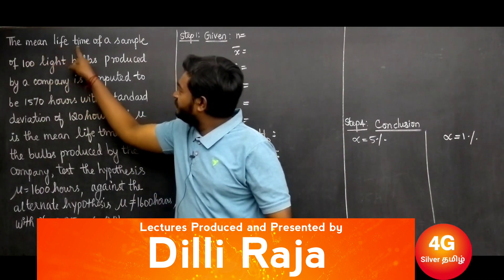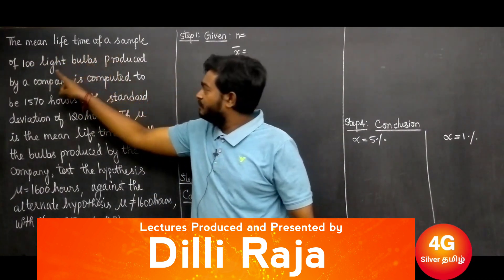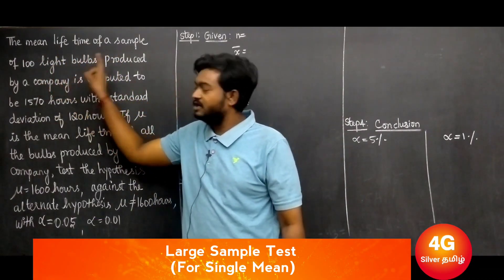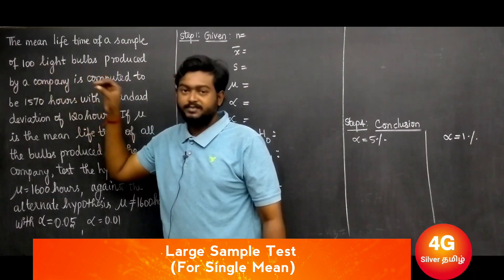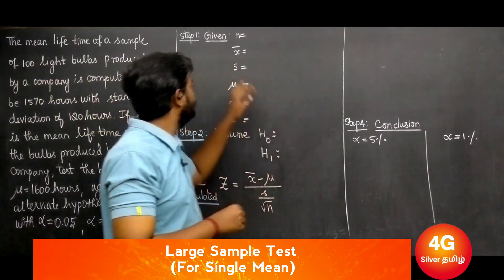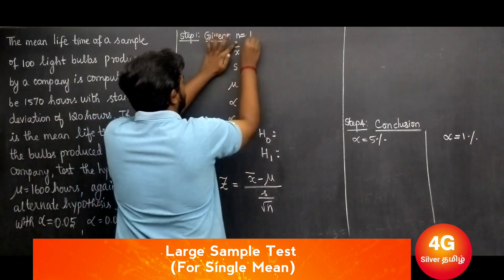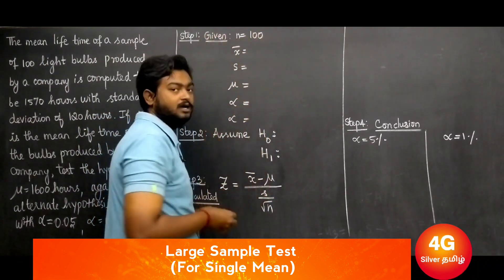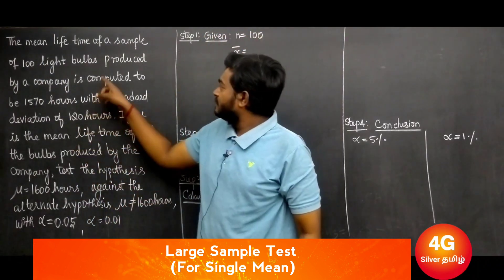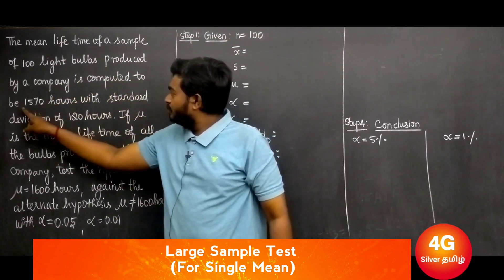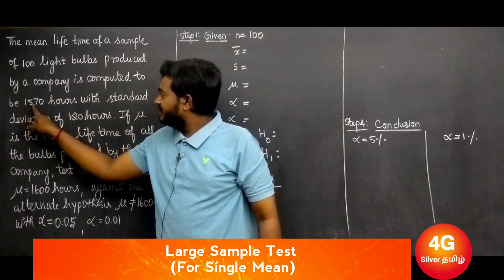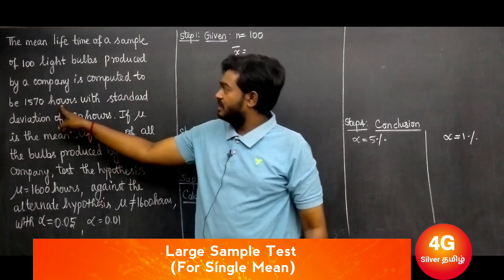The mean lifetime of a sample of 100 light bulbs, so n equals 100, produced by a company is computed to be 1570 hours.